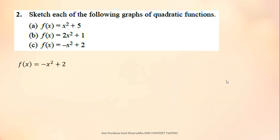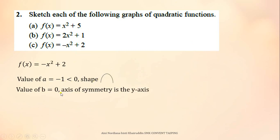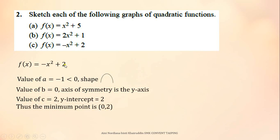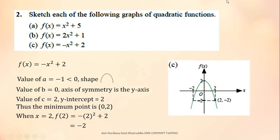For C, this is the function. Since A is equal to negative 1, which is less than 0, we will get a set (n-shape) graph. The value of B is 0, so the axis of symmetry is the y-axis. The value of C is 2, so the y-intercept is 2. Thus, the maximum point is (0, 2). I choose x = 2 and substitute to get f(x) = negative 2. This is the graph.